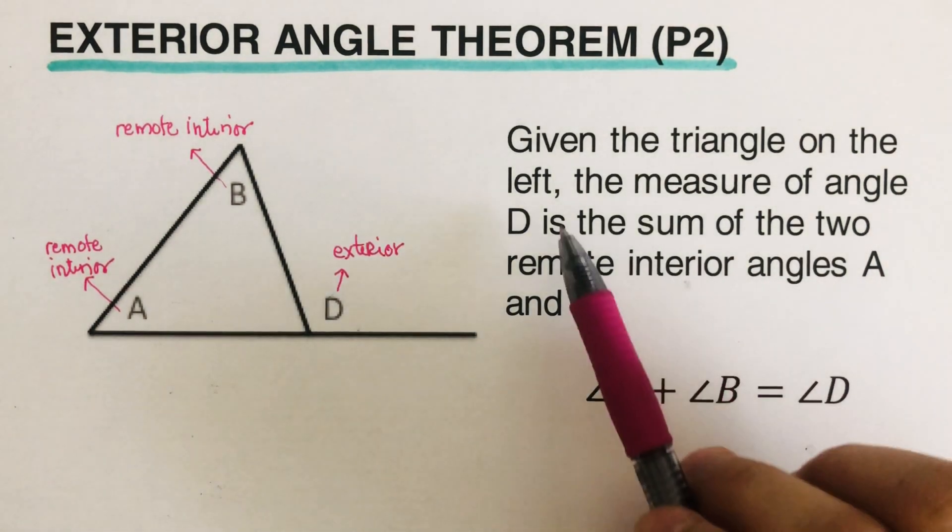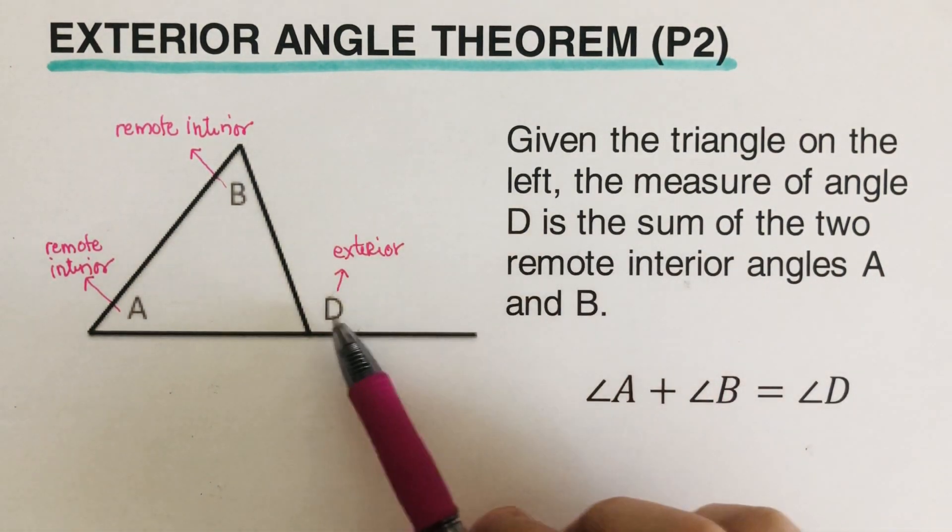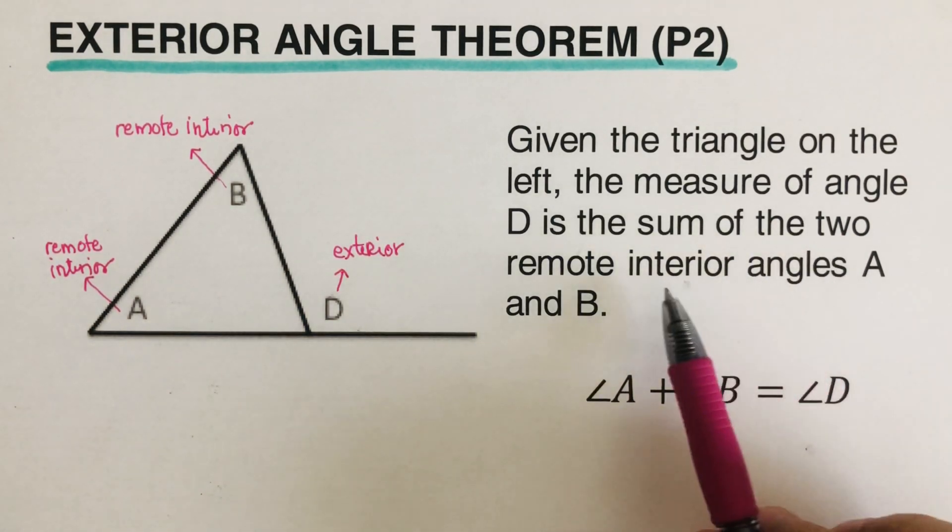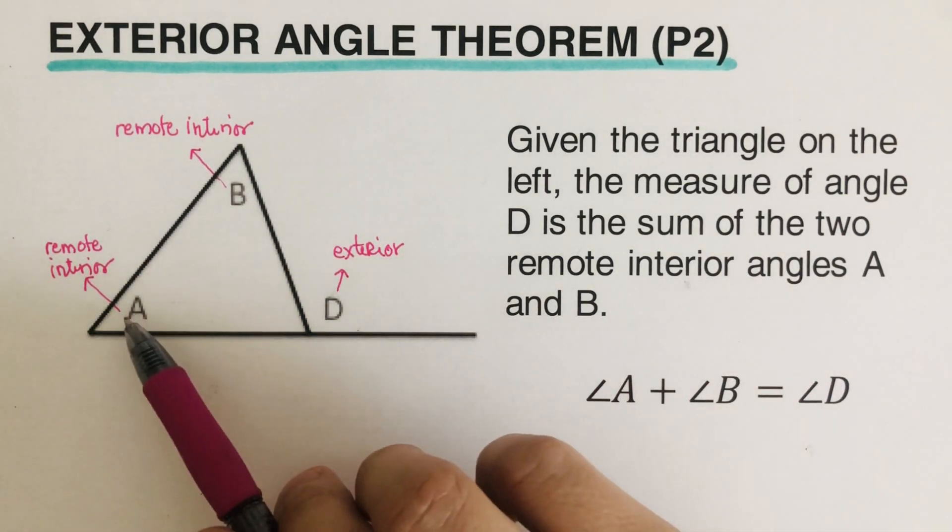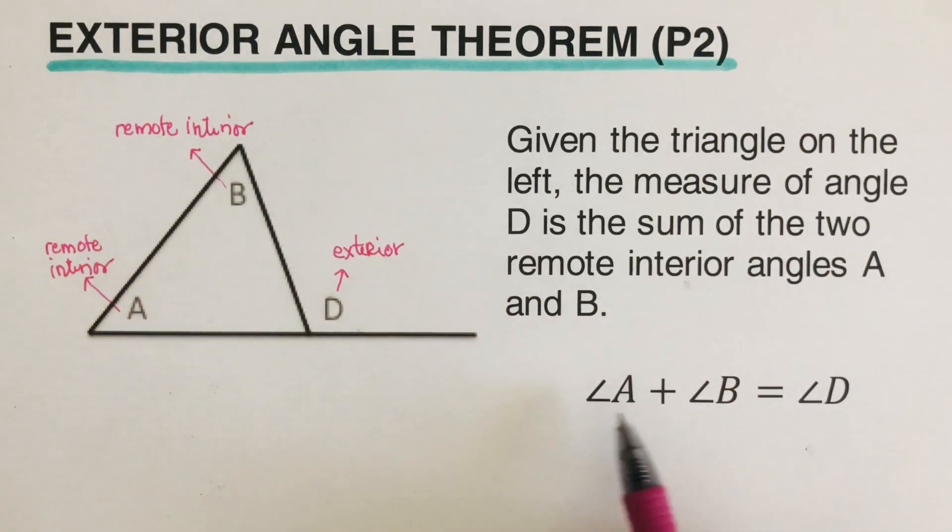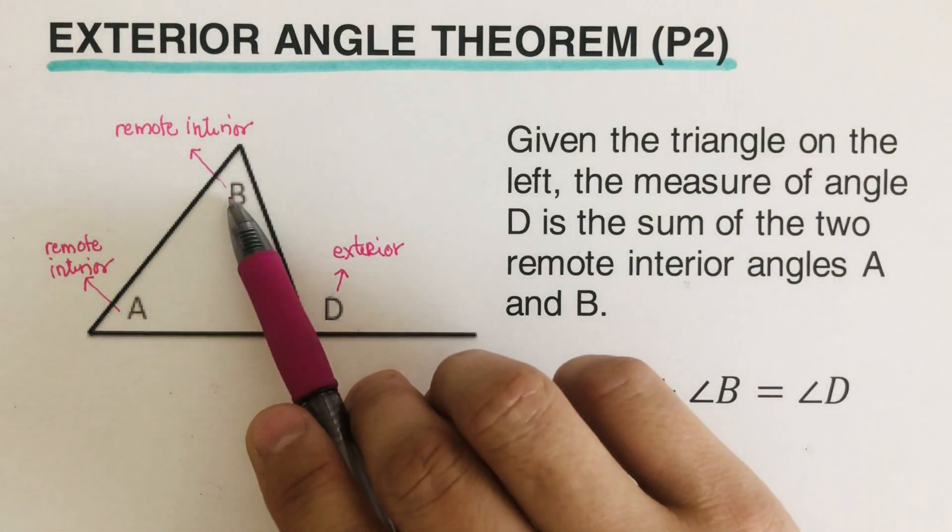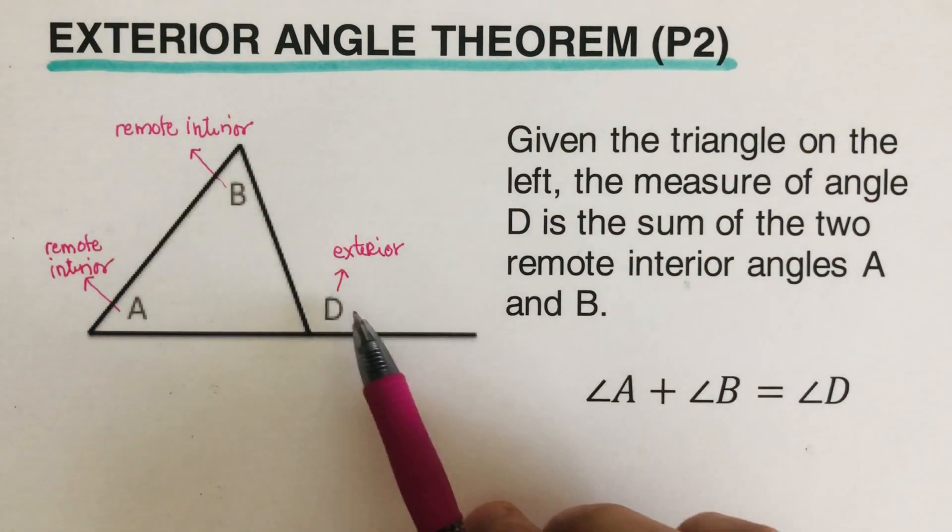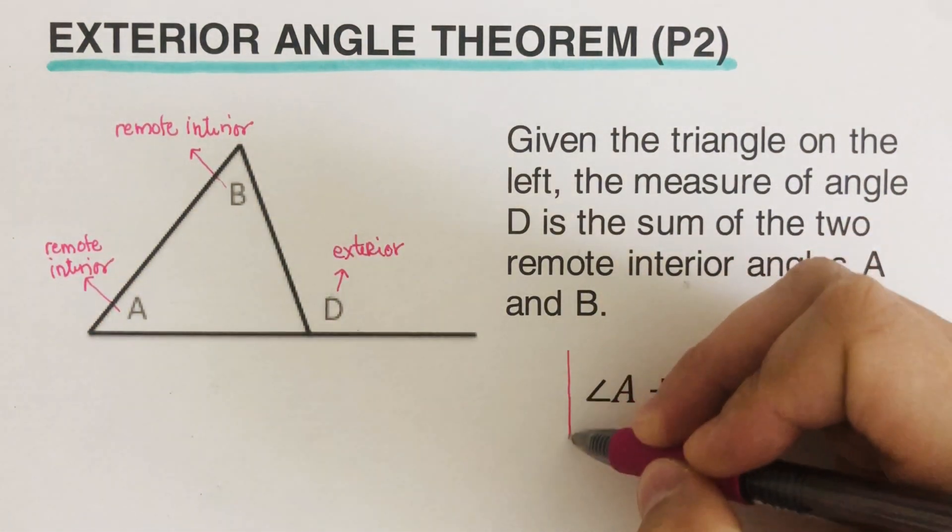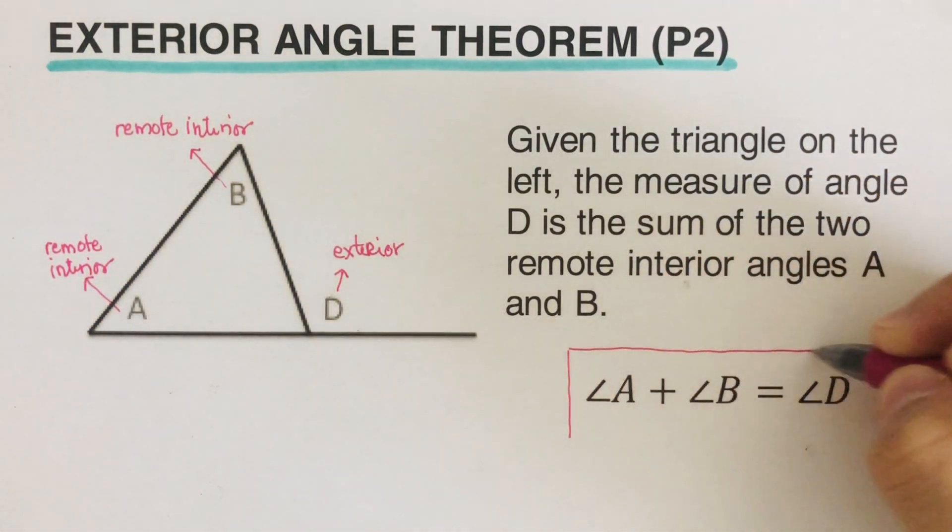Now, here's the thing. Given the triangle on the left, the measure of angle D, which is the exterior angle, is the sum of the two remote interior angles. If we add A plus B, so whatever the measures of angle A and angle B, if we add them up, that is equal to the exterior angle. This is the exterior angle theorem.